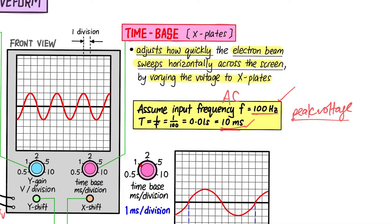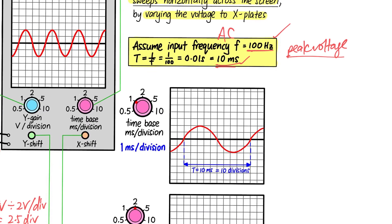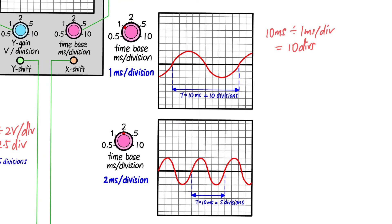With the peak voltage assumed constant, we focus only on the time base. For the first setting, the time base is set to 1 millisecond per division. With a period of 10 milliseconds divided by 1 millisecond per division, you get 10 divisions. So one complete wave occupies 10 divisions — it doesn't matter if it's slightly to the left or right; it takes 10 divisions to make one complete wave.